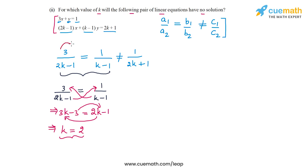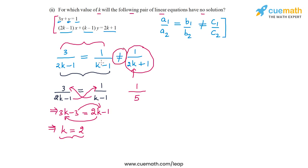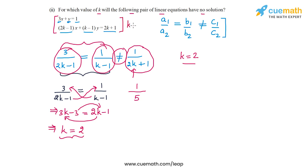For k equal to 2, these two ratios are equal. Substituting k equal to 2 in the third ratio: 1 by (2 times 2 plus 1) gives 1 by 5. So for k equal to 2, A1 by A2 equals B1 by B2, and these two ratios are not equal to C1 by C2. Therefore k equal to 2 is our answer — for k equal to 2, the given pair will have no solution.